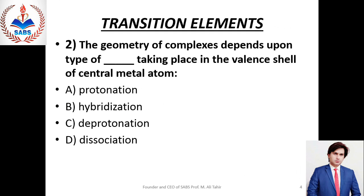Next question No. 2: The geometry of complexes depends upon the type of hybridization taking place in the valence shell of the central metal atom. Right option is Beta. کسی complex کی geometry اس بات پر depend کرتی ہے کہ central metal atom کی hybridization کونسی ہے۔ اگر hybridization SP3 ہے تو geometry tetrahedral ہوگی، اگر DSP2 ہے تو square planar، اگر DSP3 ہے تو trigonal bipyramidal، اور اگر D2SP3 ہے تو octahedral geometry ہوگی۔ Right option is Beta.